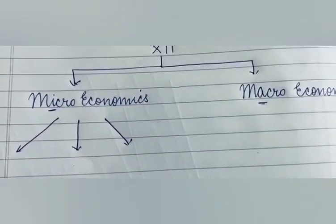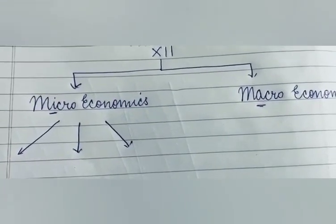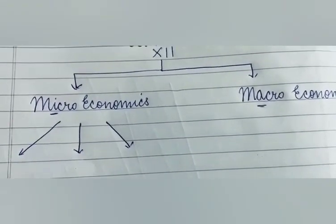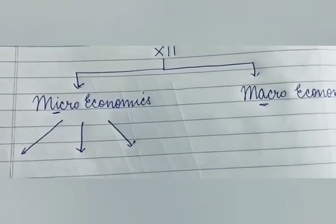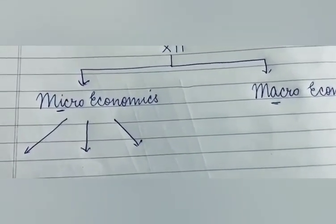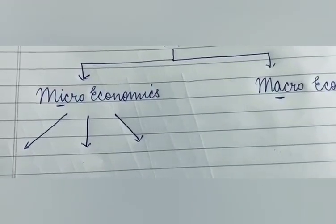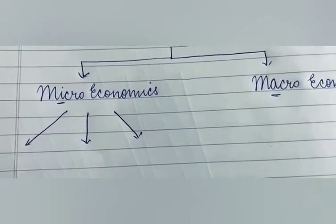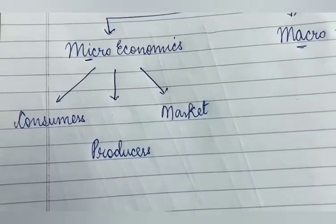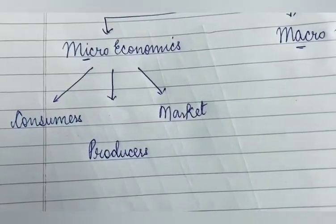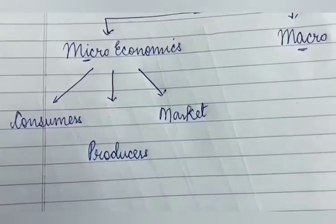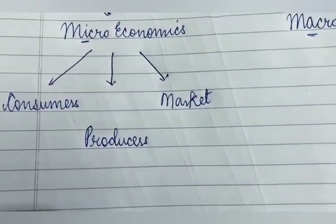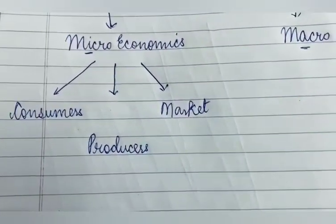Microeconomics has been divided into three segments — that is consumers, producers, and market.